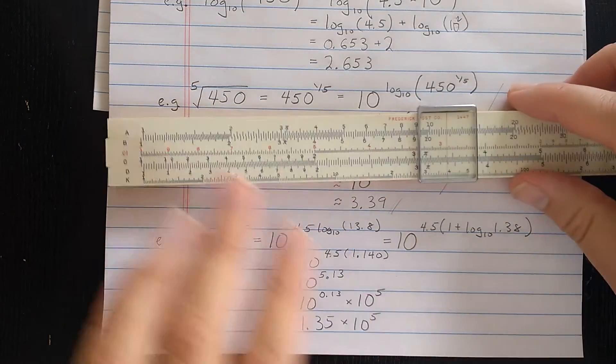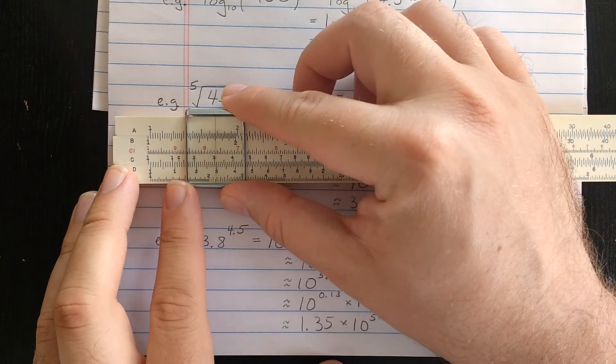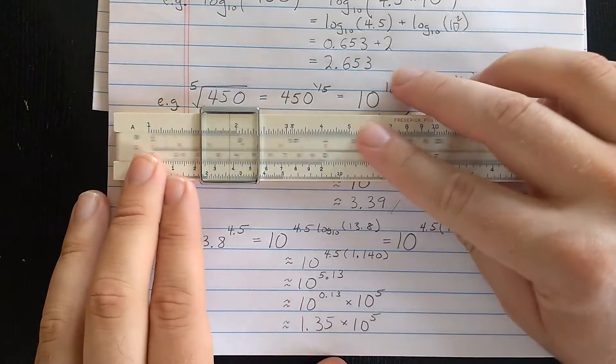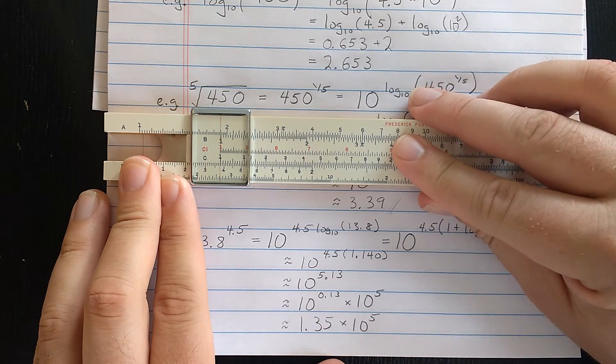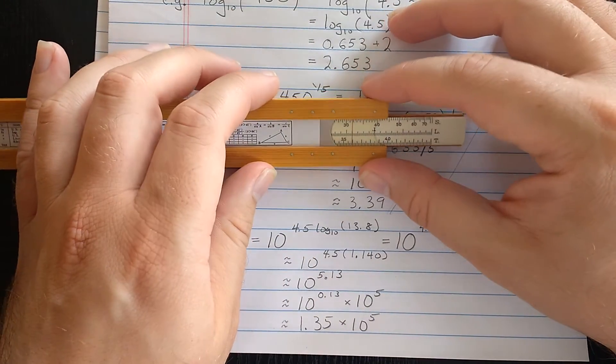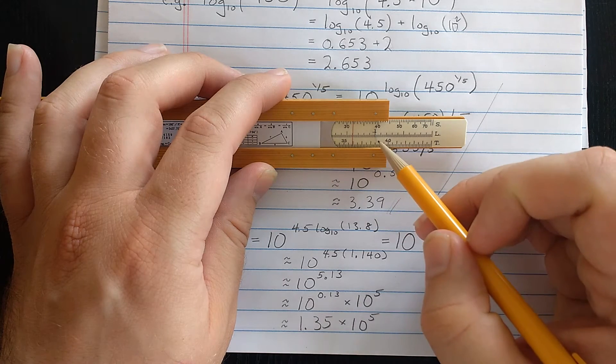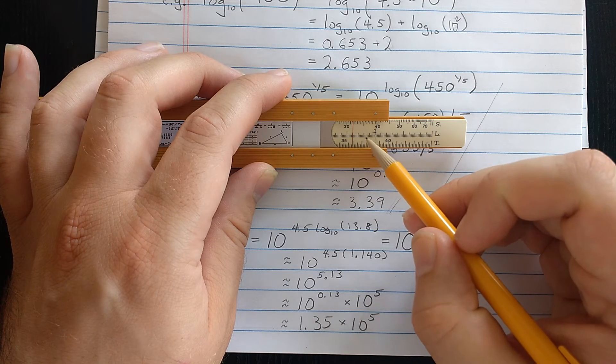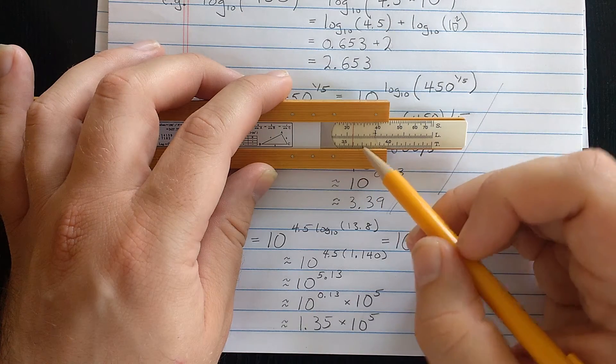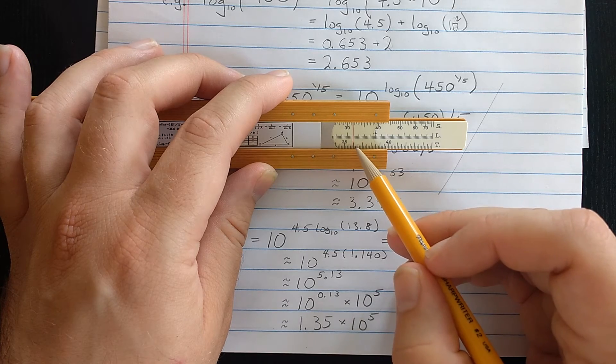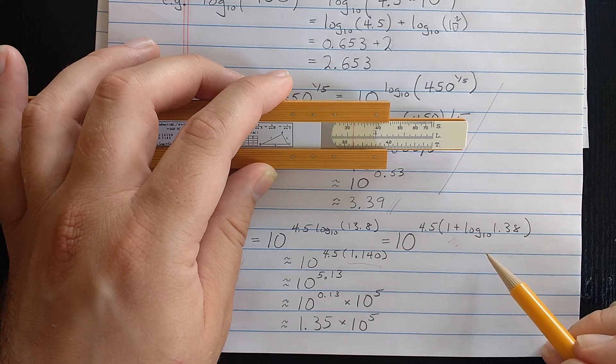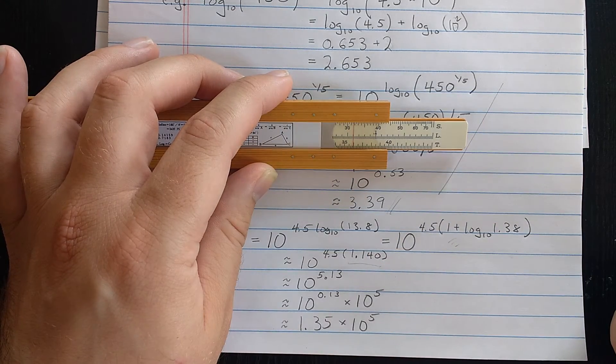Now finally, that log with base 10 of 1.38 is something I can compute using the L scale. So here's 1.38. Found that on the D scale. I'll align the index so I can read the log on the L scale. Be careful. Here. So the L scale in the middle here is telling me 0.1, 1, 2, 3, 0.14. So 0.14 is what I'm getting there on the L scale. And then I'm going to add that 1 to get 1.14 as the logarithm of 13.8.